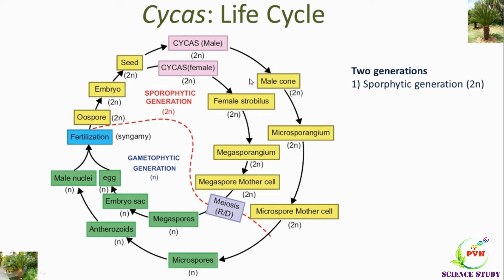The male Cycas plant produces the male cone, while the female Cycas plant does not produce a female cone but produces the megasporophyll. The male cone produces the microsporophyll. From microsporophyll, microsporangia are produced, and from megasporophyll, megasporangium is produced. The microsporangium develops into microspore mother cell and megasporangium develops into megaspore mother cell. Both undergo meiosis or reduction division.